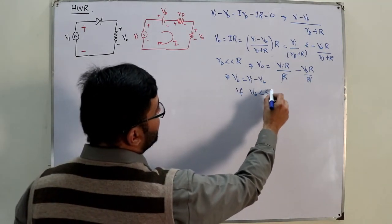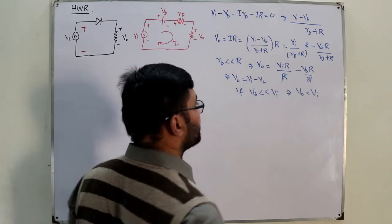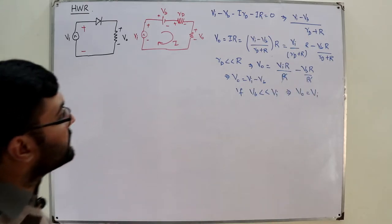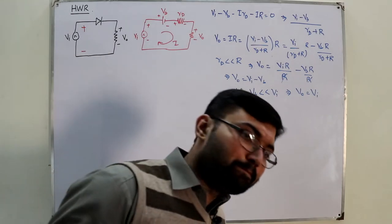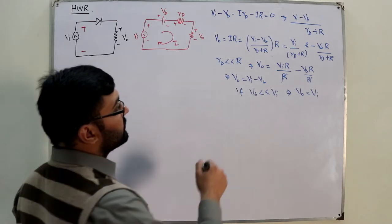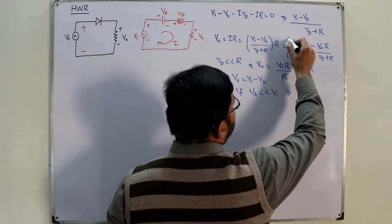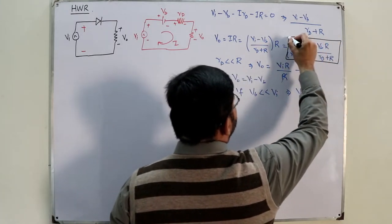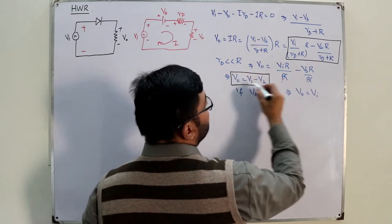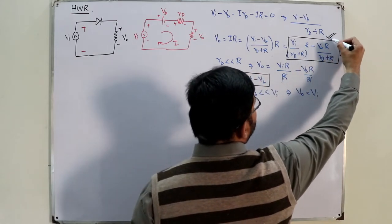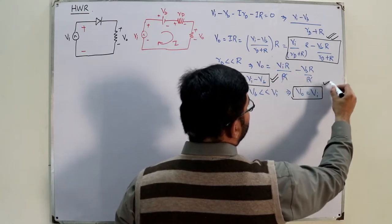If the barrier potential is also much less than the input voltage, you can further assume v_output equals v_input directly. This is what the practical diode model gives you — you can apply the same analysis to the full wave rectifier as well. This represents the second level of exactness.